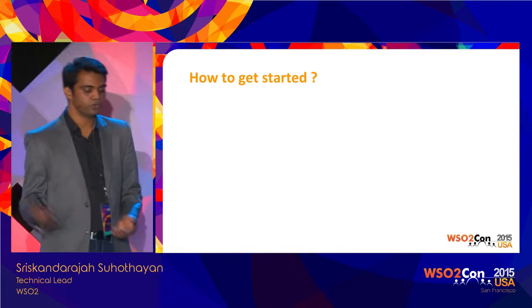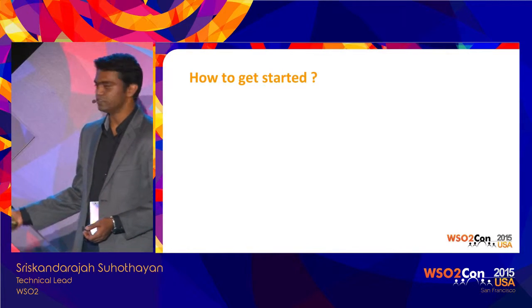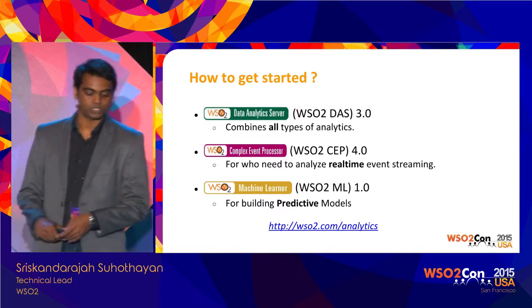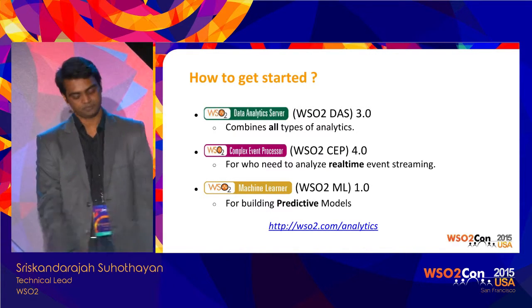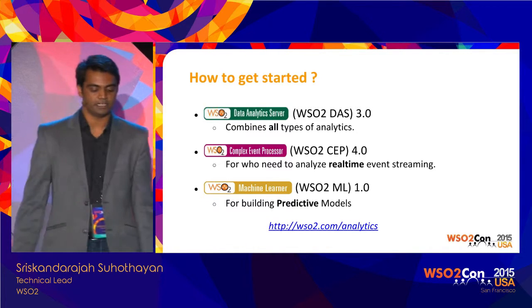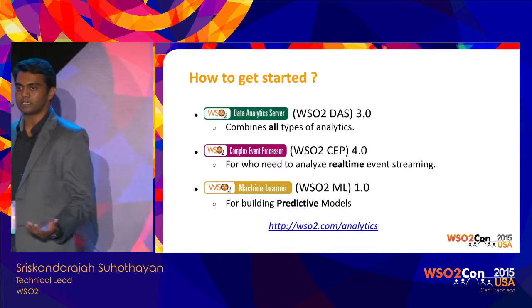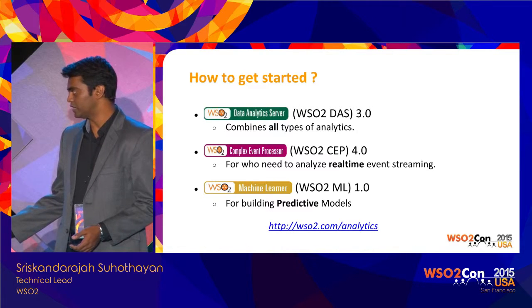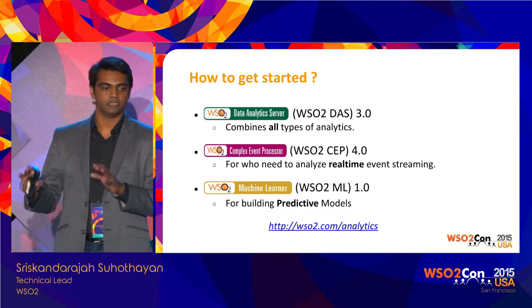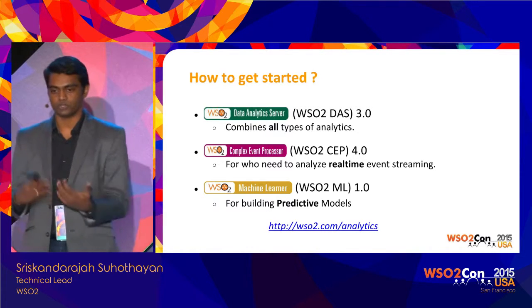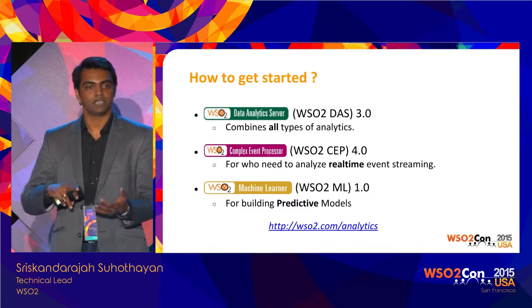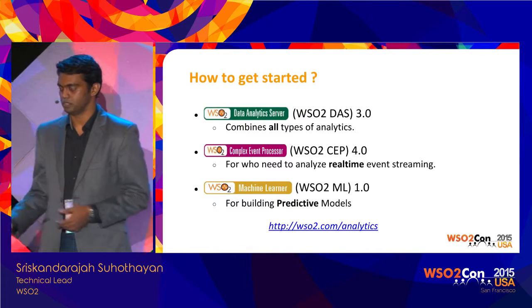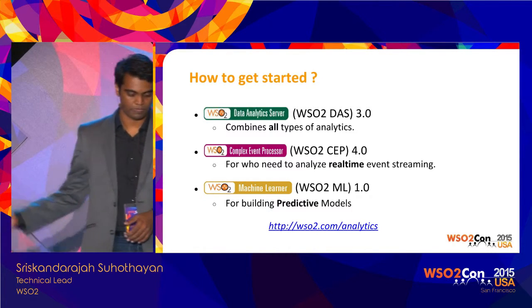If you want to get started, download the Data Analytics Server for the full picture. If you're only interested in real-time analytics, get the WSO2 Complex Event Processor — though that real-time part is also included in the Data Analytics Server. For building models and doing predictive analytics, use the Machine Learning portal. Go to wso2.com/analytics — a microsite with full details about all three products, how they work together, success stories, webinars, and resources to help you get started.